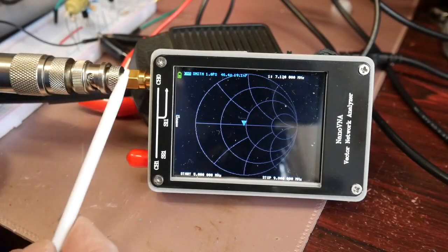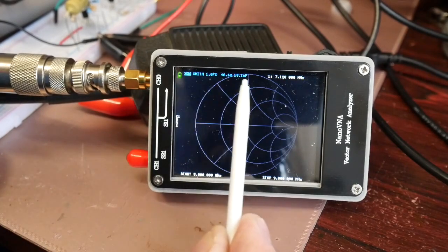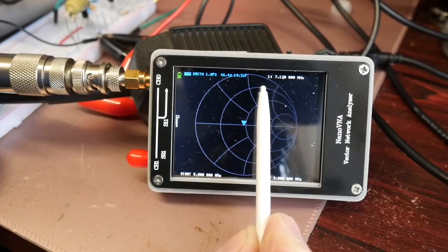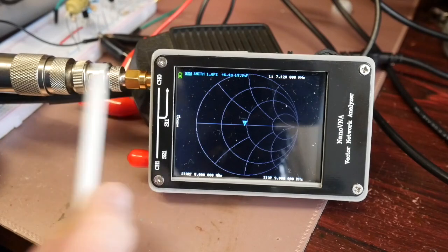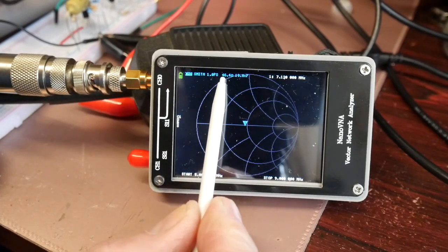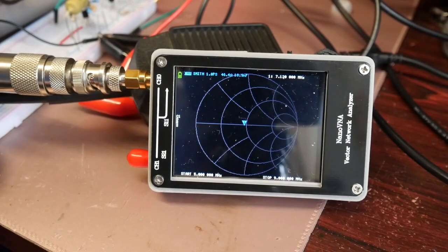I've got the dummy load attached to my vector network analyzer. I've just got it displaying a Smith chart. I've got the frequency currently set to 7.12 megahertz, pretty much in the middle of the 40 meter amateur band. I'm going to take the power measurements at about 7.12 megahertz on the transmitter as well. As you can see there, it's saying 46.4 ohms, so that's the impedance of the dummy load at this frequency. 46.4 ohms is the number that I'm going to use for calculation purposes. The DC resistance of this dummy load is about 47.5 ohms, so it'll make a small difference, but I'm going for a bit of accuracy.